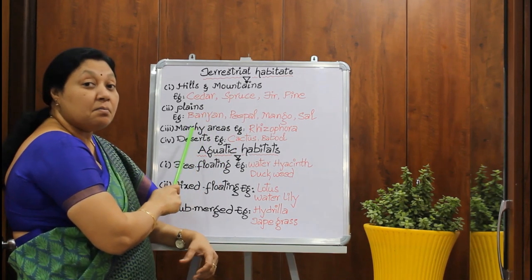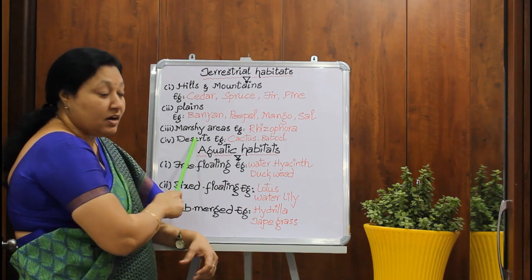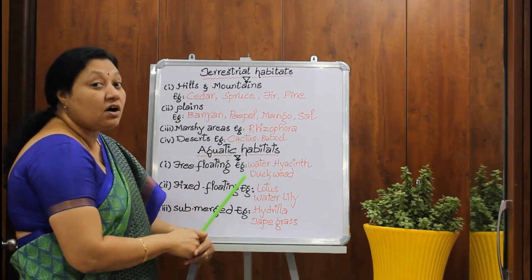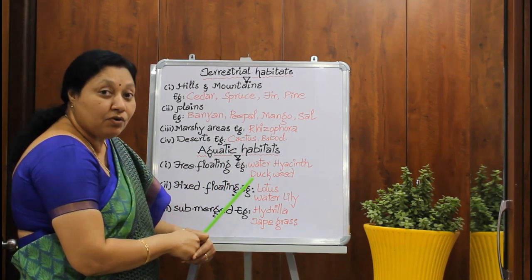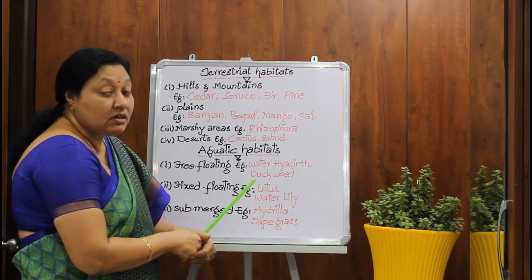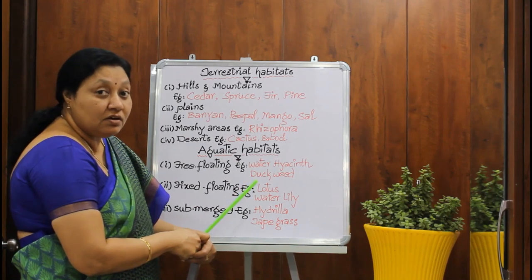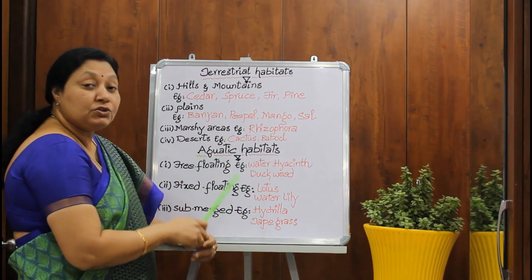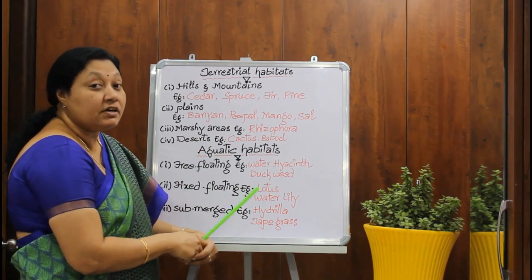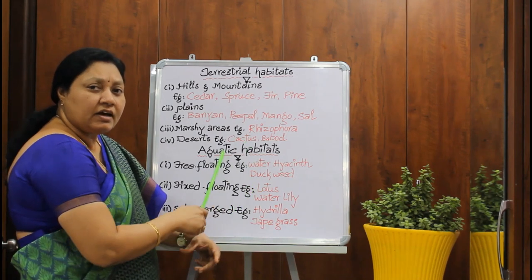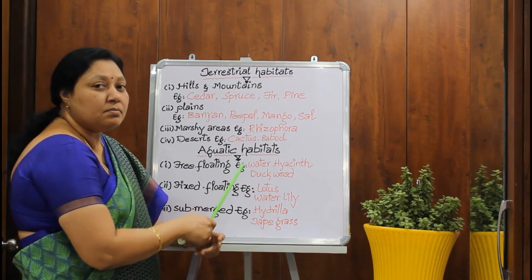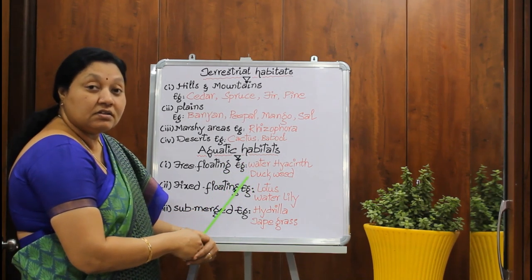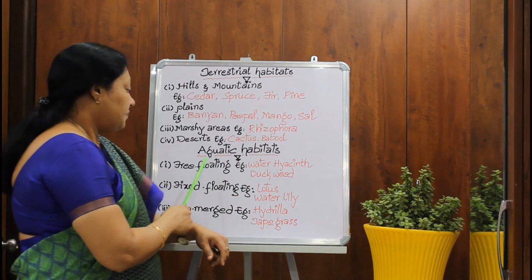Next come the marshy areas. Rhizophora is a common example of a plant that grows in marshy areas. And coming to the plants that grow in deserts, cactus and baobab are the trees that grow in deserts.